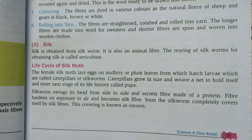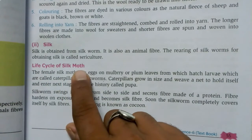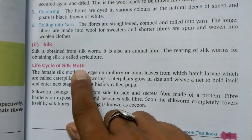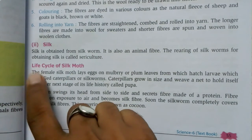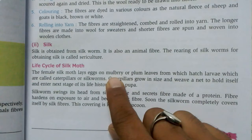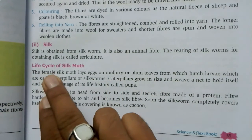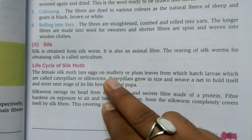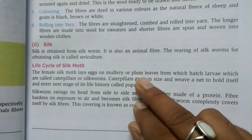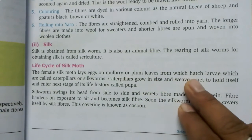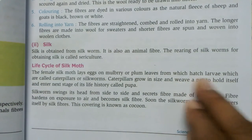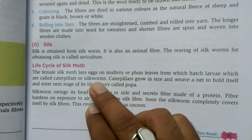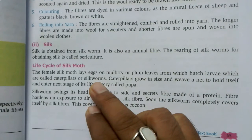It is called the life cycle of silkworms. The female silk moth lays eggs on mulberry and plum leaves, from which larvae — called caterpillars or silkworms — hatch.